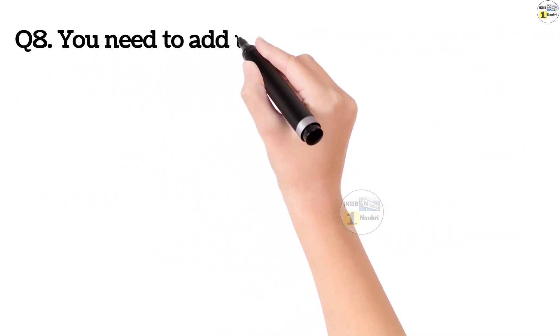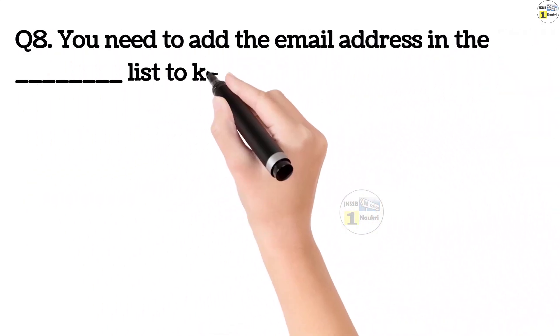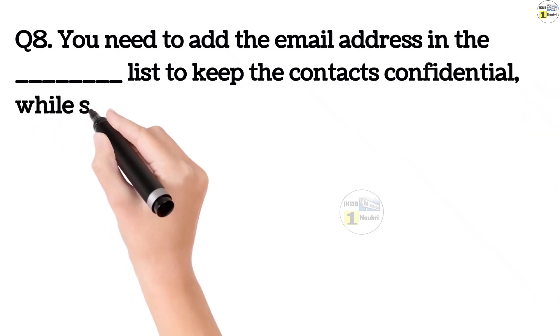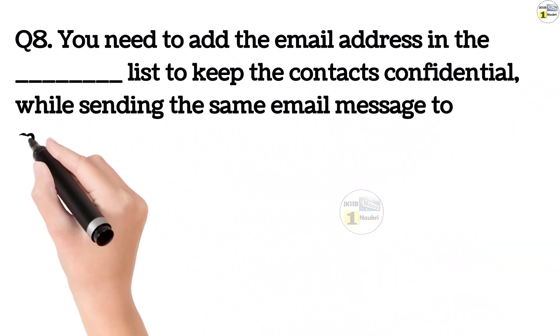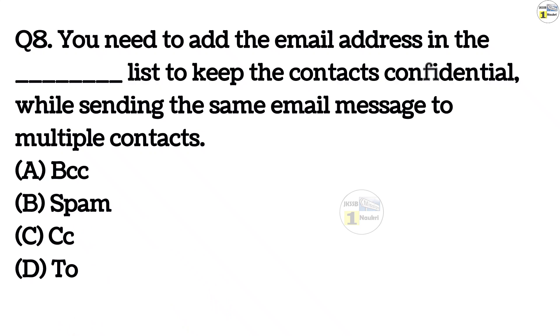Question number 8. You need to add the email address in the dash list to keep the contacts confidential while sending the same email message to multiple contacts. Option A, BCC. Option B, spam. Option C, CC. Option D, to.